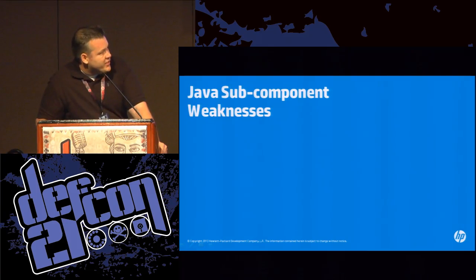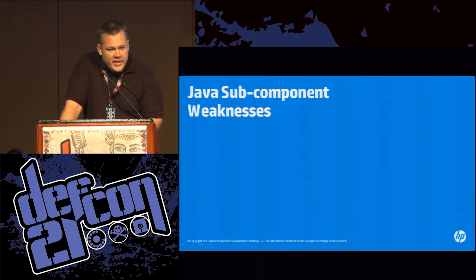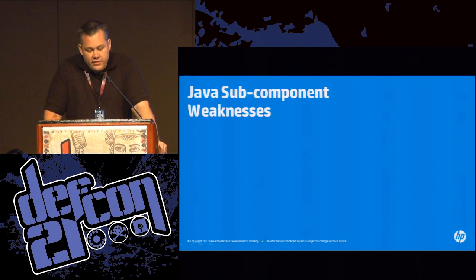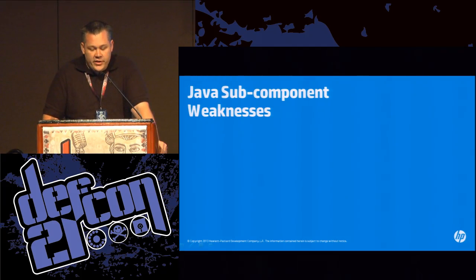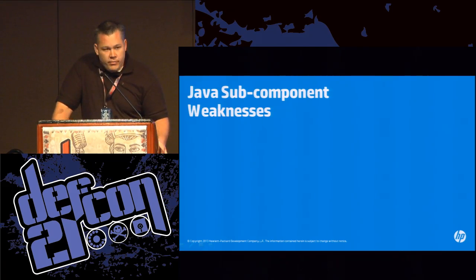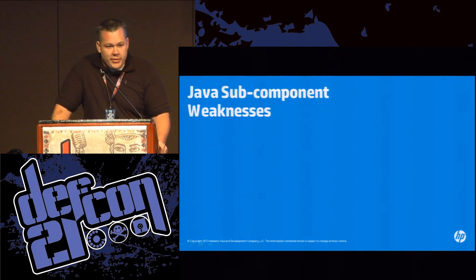Now we're going to take a look at a set of case studies for the most popular vulnerability types. We'll do two case studies on sandbox issues in the library subcomponent, two different memory corruption issues in the 2D component, and untrusted pointer dereferencing in the JavaFX component. These POCs were just released and this is probably the second time they've actually been shown publicly.